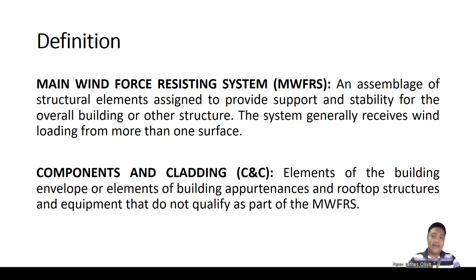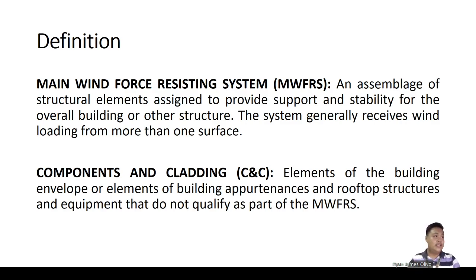Components and Cladding are the elements in a building that support the building envelope. Components are those to which cladding is attached, while cladding is the term for what envelopes the building — or anything that is not qualified as part of MWFRS. This definition is from ASCE 7-16 Chapter 26 and NSCP 2015 Section 207A.